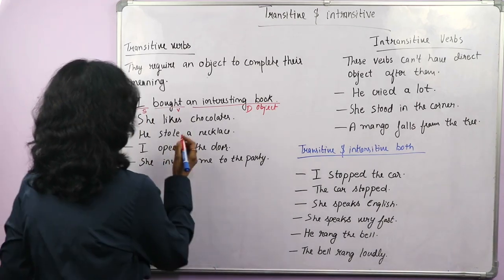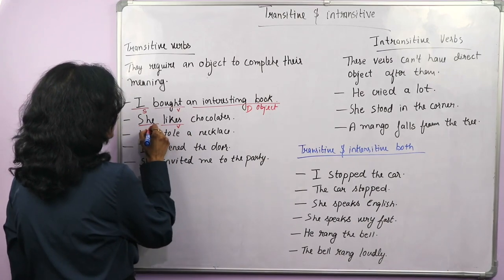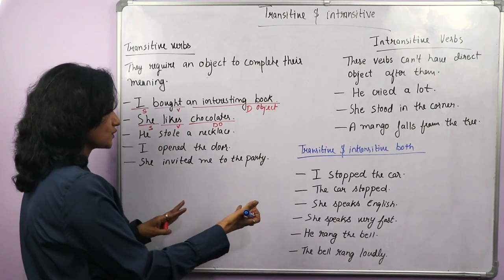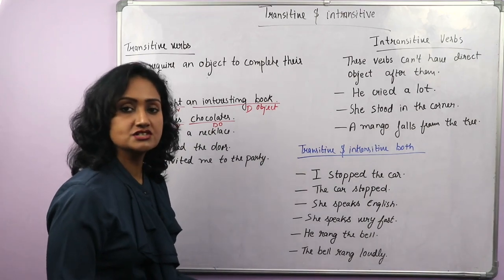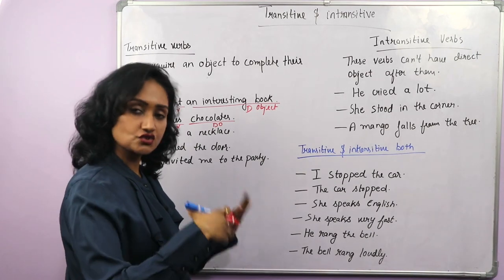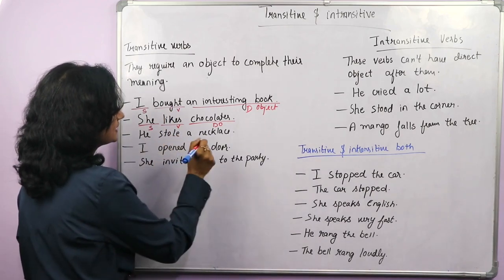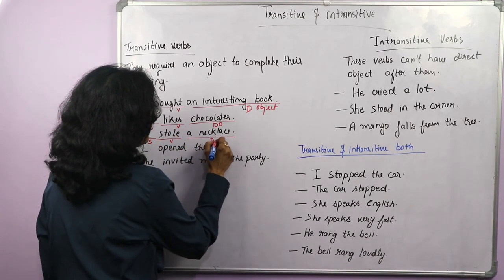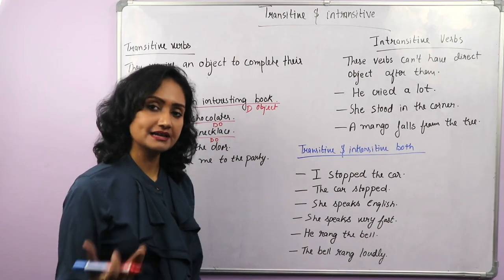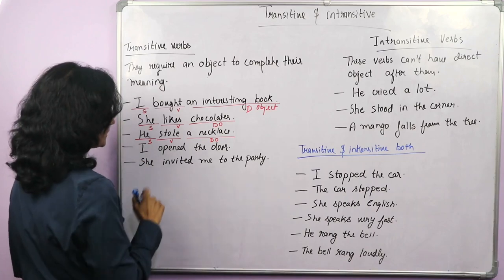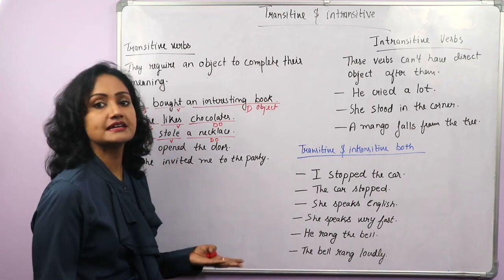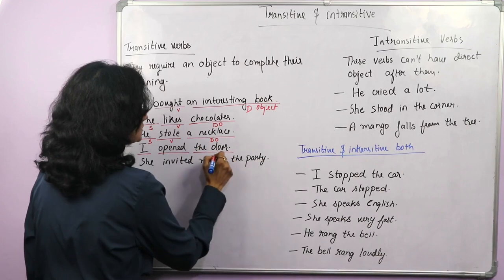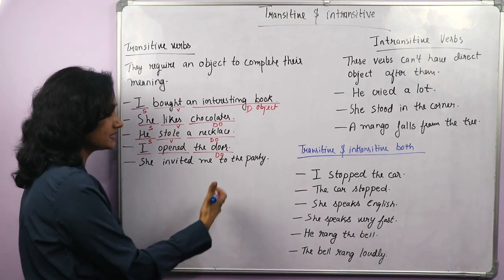'She likes chocolate' — likes is the main verb, she is the subject, and chocolate is the direct object. 'He stole a necklace' — he is the subject, stole is the verb, necklace is the direct object. He stole what? He stole a necklace — so stole is a transitive verb. 'I opened the door' — I opened what? The door. 'She invited me to the party' — me is the direct object. In transitive verbs you ask what or who.